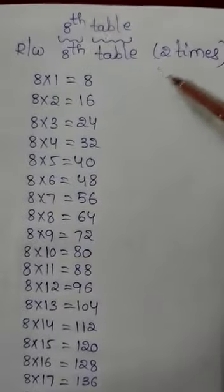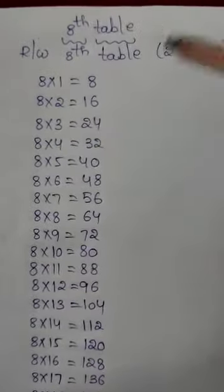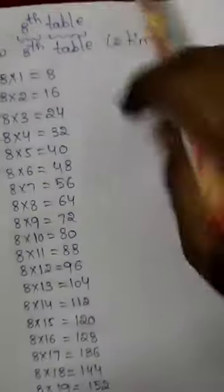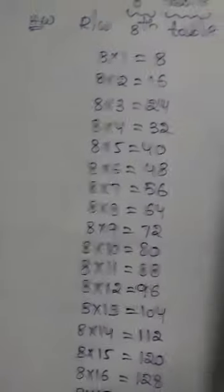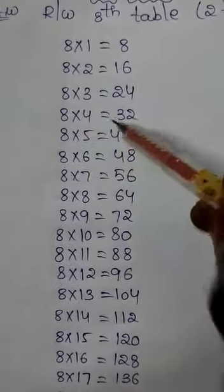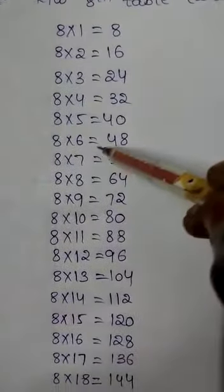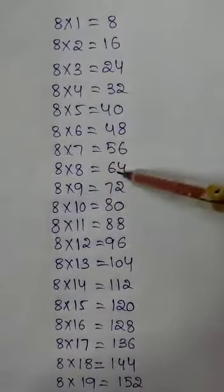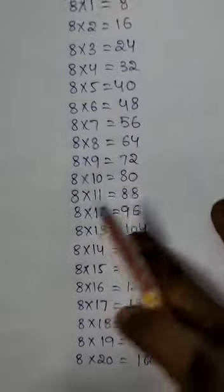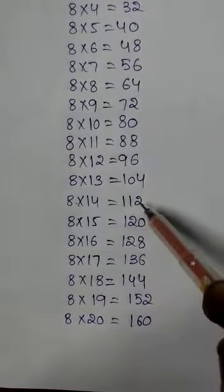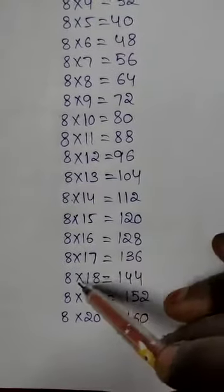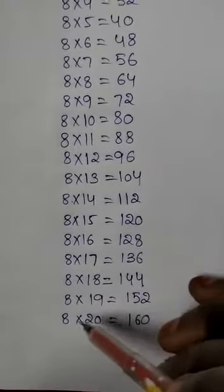Read and write the 8th table with 20 steps, 2 times. 8 1s are 8, 8 2s are 16, 8 3s are 24, 8 4s are 32, 8 5s are 40, 8 6s are 48, 8 7s are 56, 8 8s are 64, 8 9s are 72, 8 10s are 80, 8 11s are 88, 8 12s are 96, 8 13s are 104, 8 14s are 112, 8 15s are 120, 8 16s are 128, 8 17s are 136, 8 18s are 144, 8 19s are 152, 8 20s are 160.